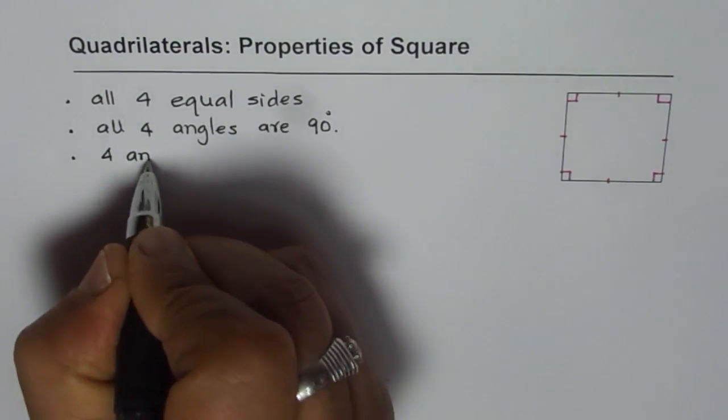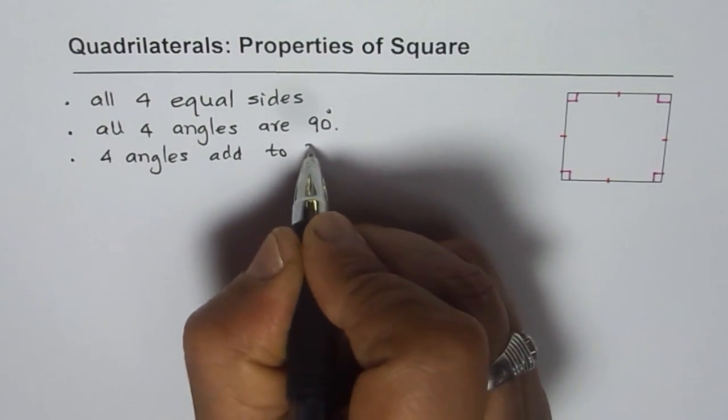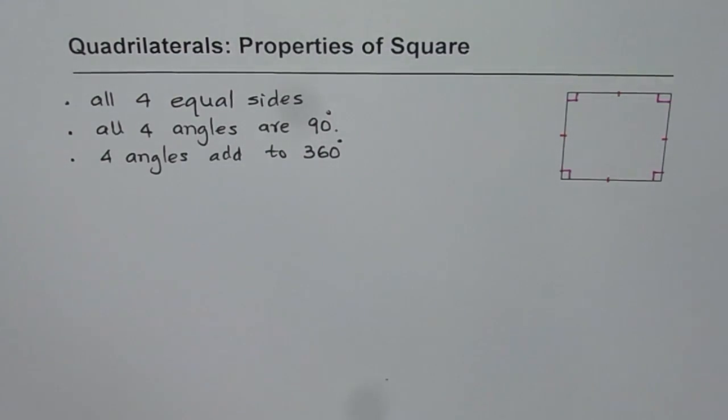So four angles add to how much? 360 degrees and that is for all quadrilaterals.